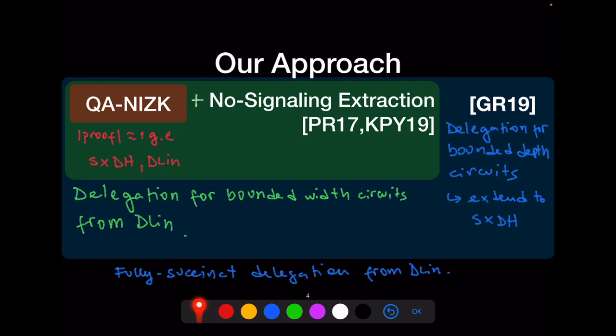In order to extend these techniques to any circuit, we use our work at AsiaCrypt'19, which gives delegation for bounded-depth circuits. The bounded-width result has proof/verification time growing with the width; the bounded-depth result has proof/verification time growing with the depth. By mixing the two we get proofs that grow with neither the width nor the depth — they are fully succinct and based just on DLIN. The only remaining issue is that our AsiaCrypt'19 work is based on Q assumptions, and since we want to base everything on constant-size assumptions, we need to extend those techniques to be based on SXDH.